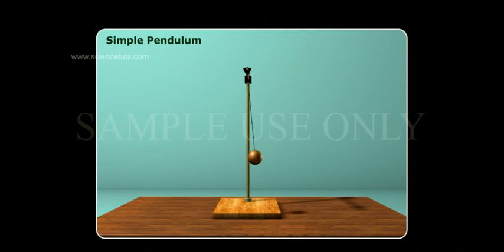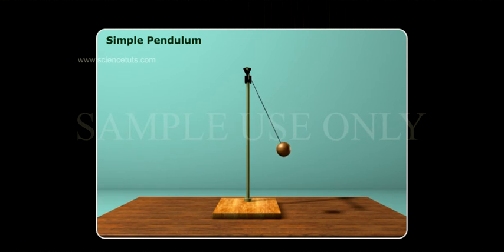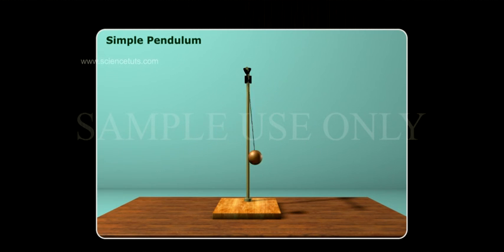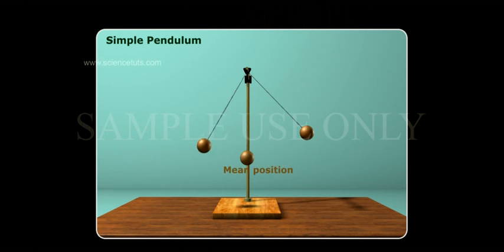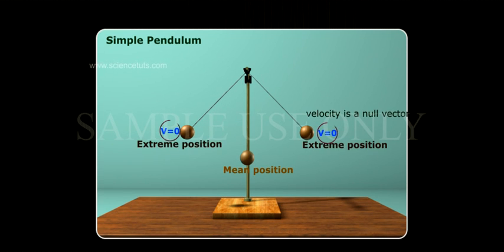In simple pendulum oscillation, the velocity of the bob at extreme position. From this illustration, we observe that the magnitude of velocity of the bob is zero — V is equal to zero at extreme position. Therefore, velocity is a NULL VECTOR.